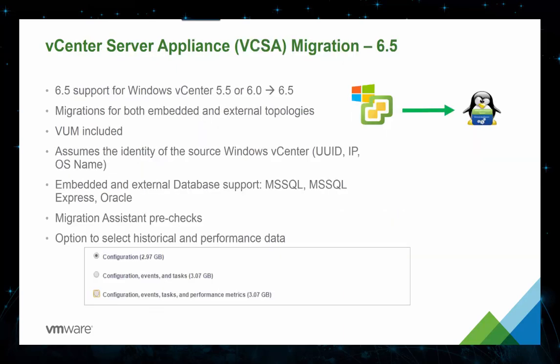The new vCenter Server Appliance allows you to migrate from vCenter Server 5.5 or 6.0 directly to 6.5. vSphere Update Manager, or VUM, is included as part of the migration. The migration supports both embedded and external database configurations for MS-SQL, MySQL Express, and Oracle. The migration assistant also performs a pre-check to ensure the migration will complete successfully before starting, and you can also migrate your historical and performance data as well.